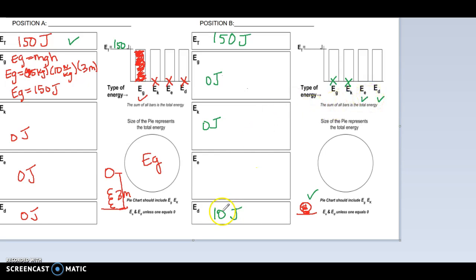So I have some amount of only 10 joules of ED, but my total is 150. That means there has to be 140 joules here for elastic energy, because this has to total up to 150.